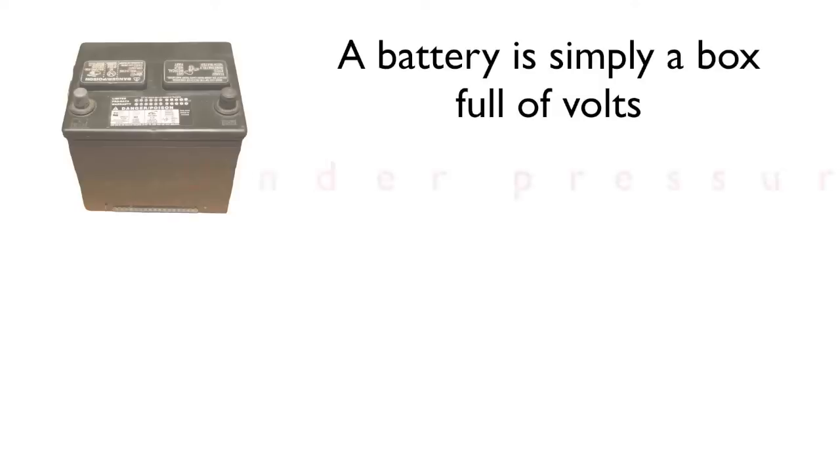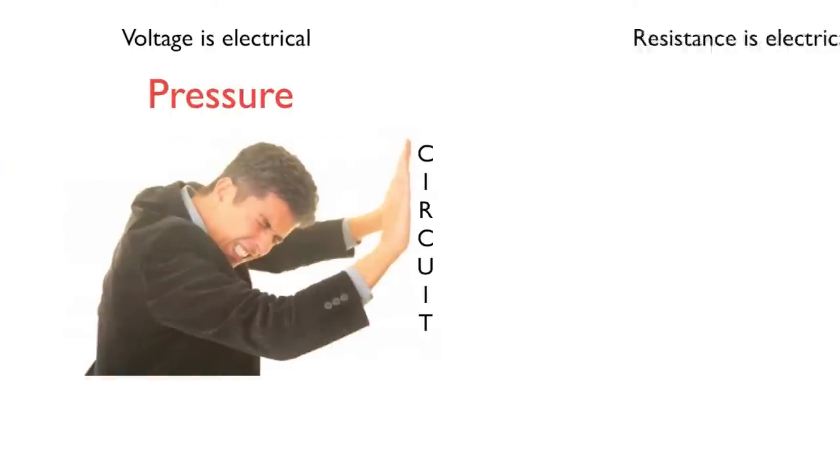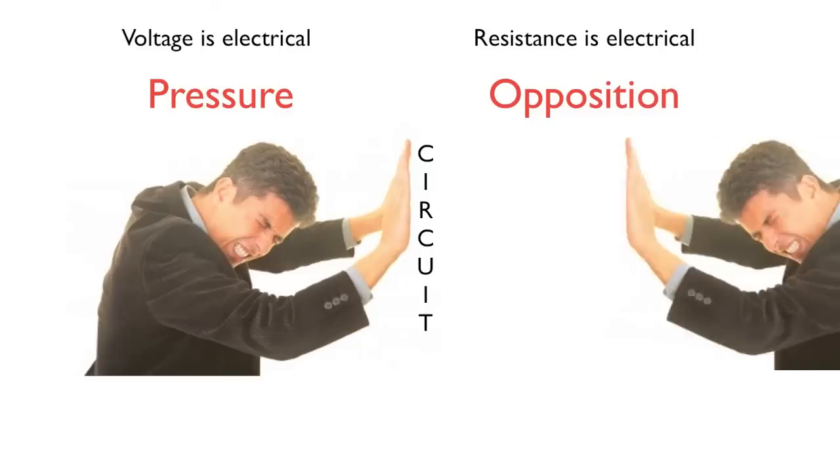A battery is simply a box full of volts under pressure. It's a lot like a portable air tank under pressure. And that pressure provides the push to overcome the resistance. In a circuit, voltage is electrical pressure, and resistance is electrical opposition to that pressure.